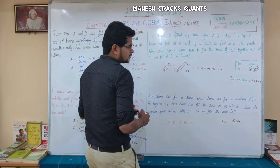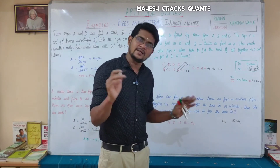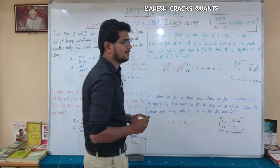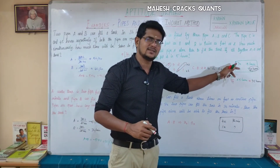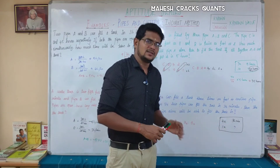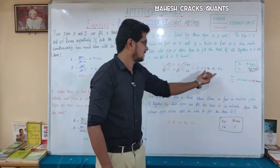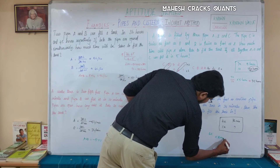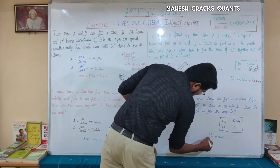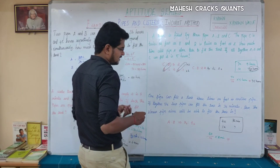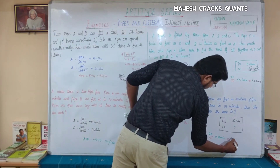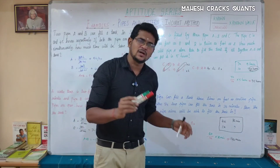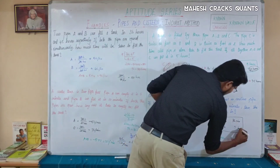The slower pipe is 1x. Since 4x fills the tank in 36 minutes, we need to find 1x. Using the ratio: 4x corresponds to 36 minutes, so 1x corresponds to 4 × 36 = 144 minutes. The slower pipe alone will fill the tank in 144 minutes.